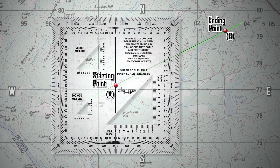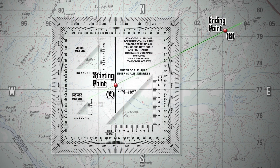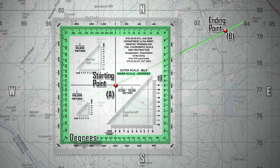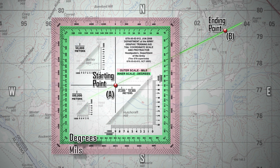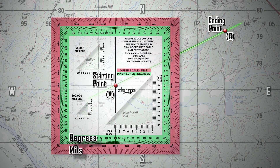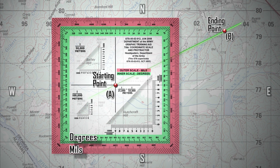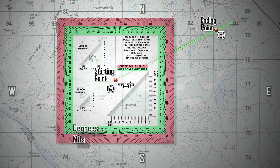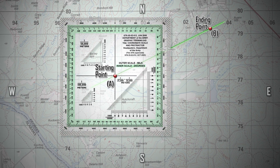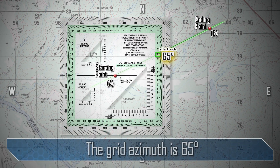Determine the value of the grid azimuth using the inner scale for degrees, not the outer scale for mils. In this example, the grid azimuth would be 65 degrees.